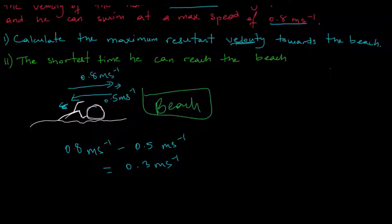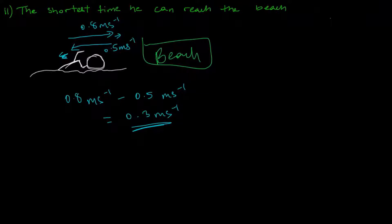So basically what would happen is that the swimmer will swim toward the beach with a speed of 0.3 meters per second. Now the part two of the question said we should find the shortest time which he can reach the beach. So we're doing part two here. This was part one. This was answer to part one. Now we're looking at part two.